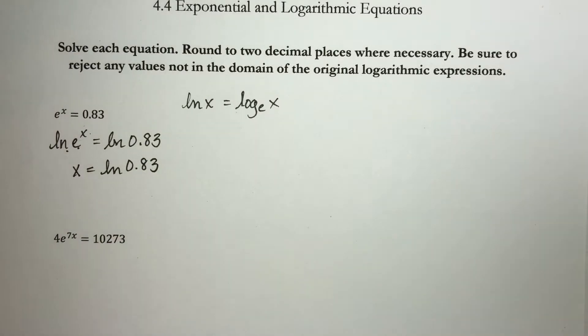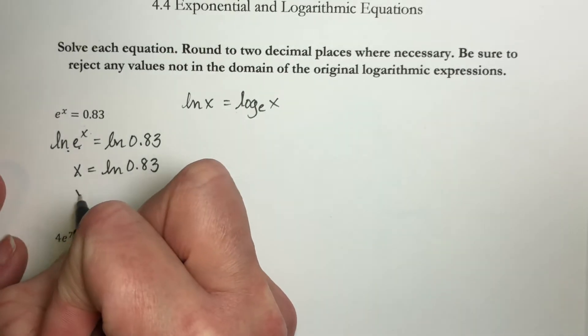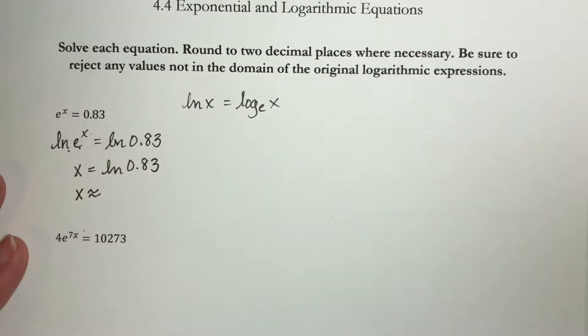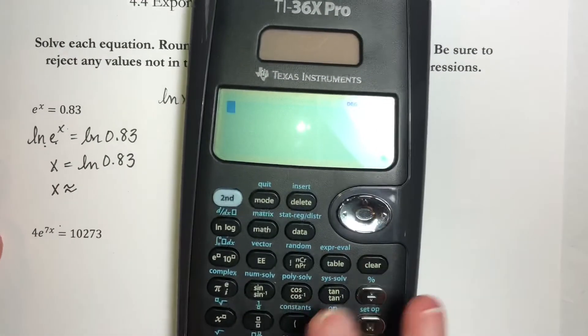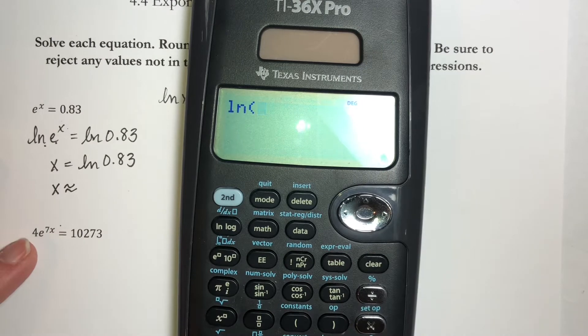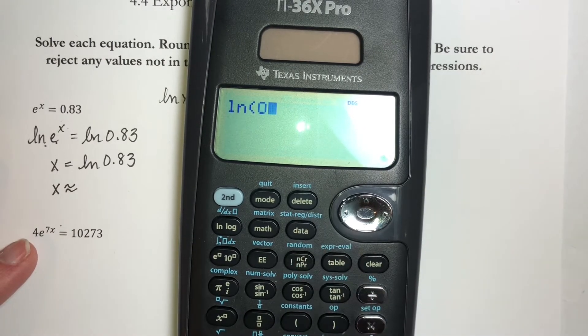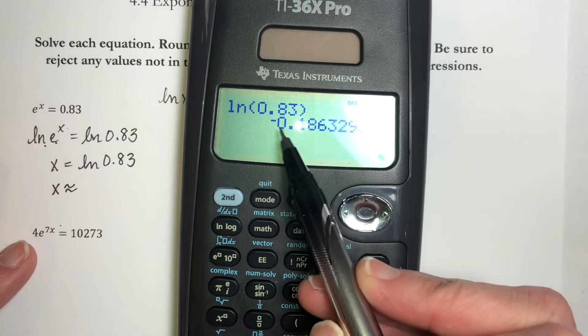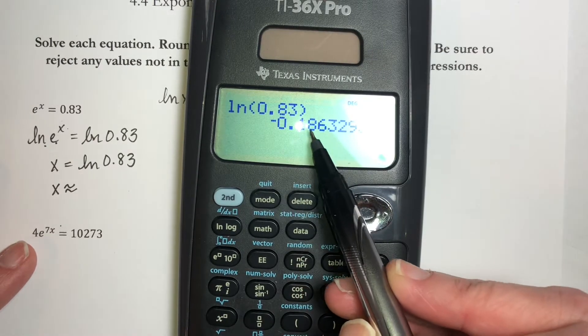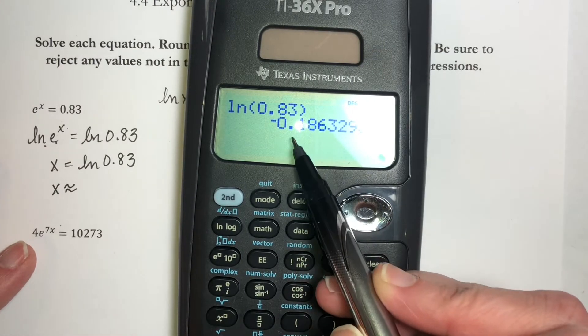This is my exact answer. We are asked to find a decimal approximation, so x is approximately equal to, I go to my calculator and I find natural log of 0.83. That gives me negative 0.1, and we're supposed to round to 2 decimal places, so that's going to be negative 0.19.